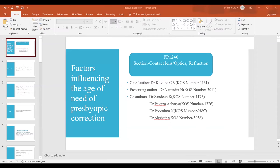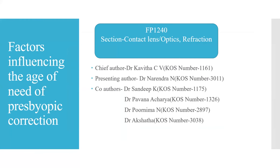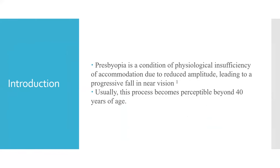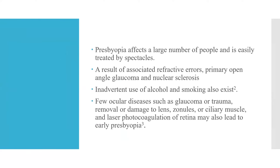I'm Dr. Narendra, ma'am. Yes, you can go ahead. Good afternoon, everyone. I'll be starting the topic. Title is Factors Influencing the Age of Need of Presbyopia Correction. Chief Author being Dr. Kavita Siviv, Professor and HOD. Introduction: presbyopia is a condition of physiological insufficiency of accommodation due to reduced amplitude leading to a progressive fall in near vision. Usually this process becomes perceptible beyond 40 years of age. It affects a large number of people and is easily treated by spectacles. It is a result of associated refractive errors, primary open-angle glaucoma, and nuclear sclerosis, and also inadvertent use of alcohol and smoking. Few ocular diseases such as glaucoma or trauma, removal or damage to lens, zonules or ciliary muscle, and laser photocoagulation of retina may also lead to early presbyopia.